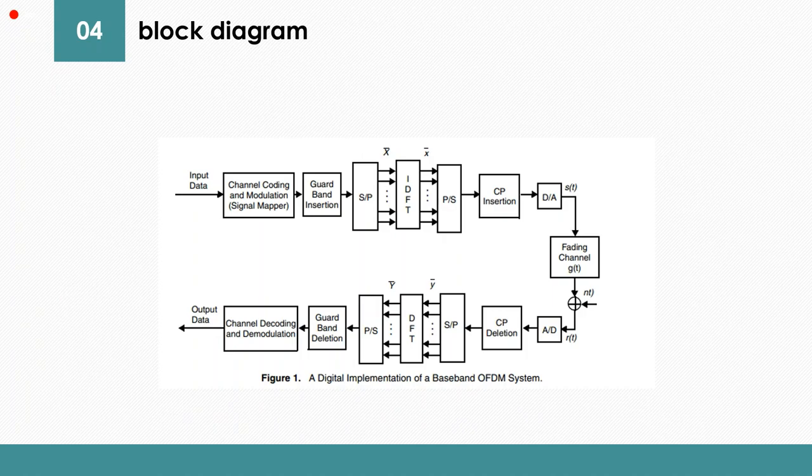Make a digital to analog transform, then go past a fading channel like Rayleigh, and analog to digital transform, then delete the cyclic prefix, and make the serial to parallel, go to the DFT again, and again to the parallel to serial. Finally, delete the guard band, and channel decode, and channel demodulation to get output data.